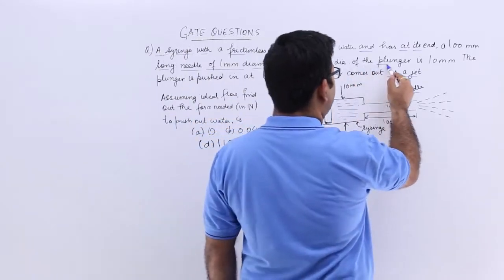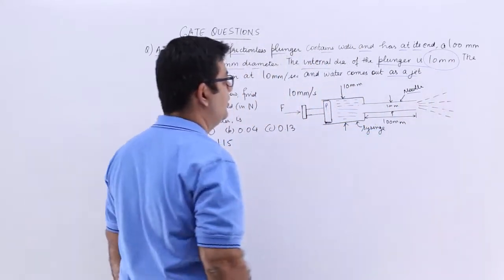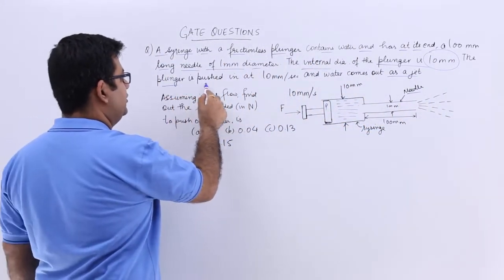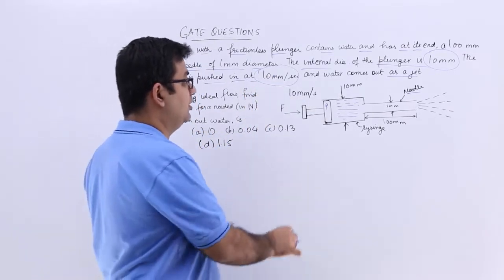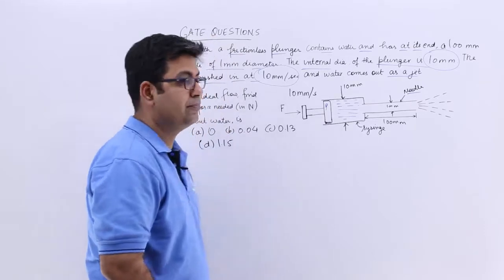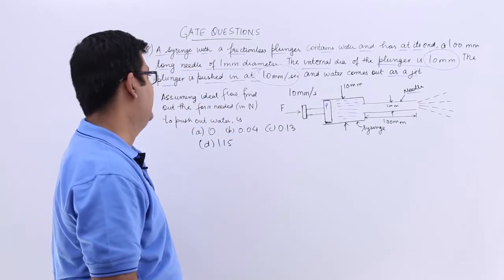The internal diameter of the plunger is 10 mm. The plunger is pushed in at a rate of 10 mm per second. So this is the velocity of the plunger and the water comes out as a jet.